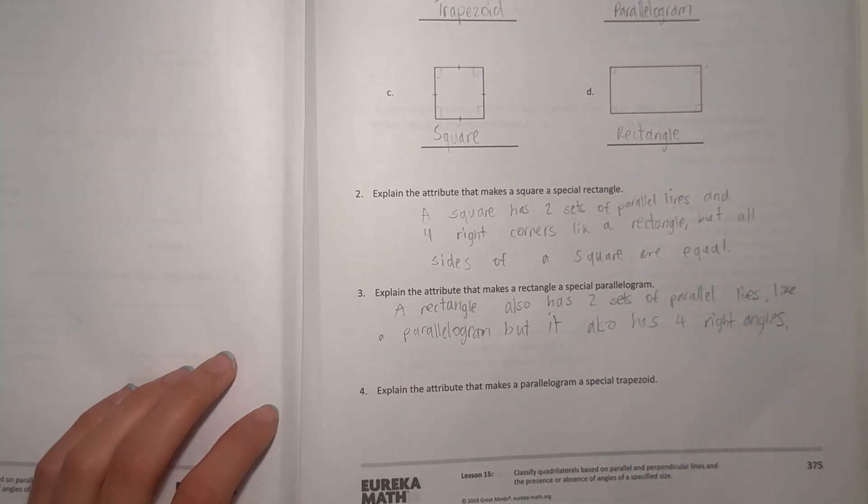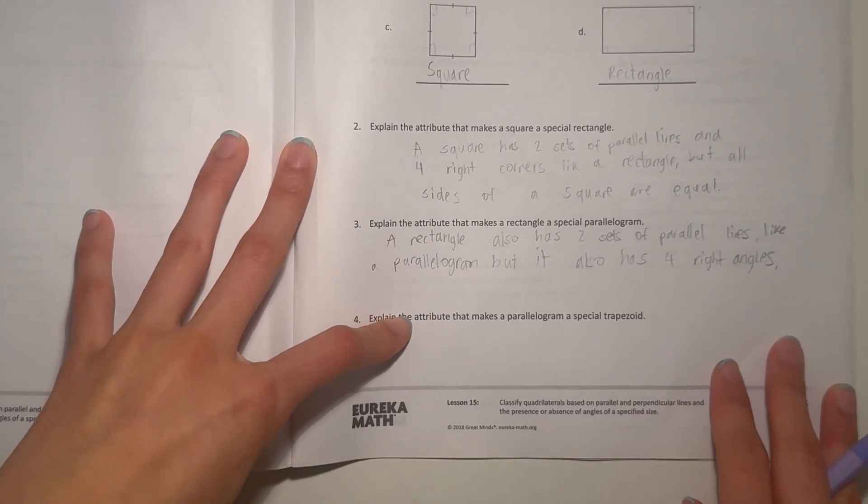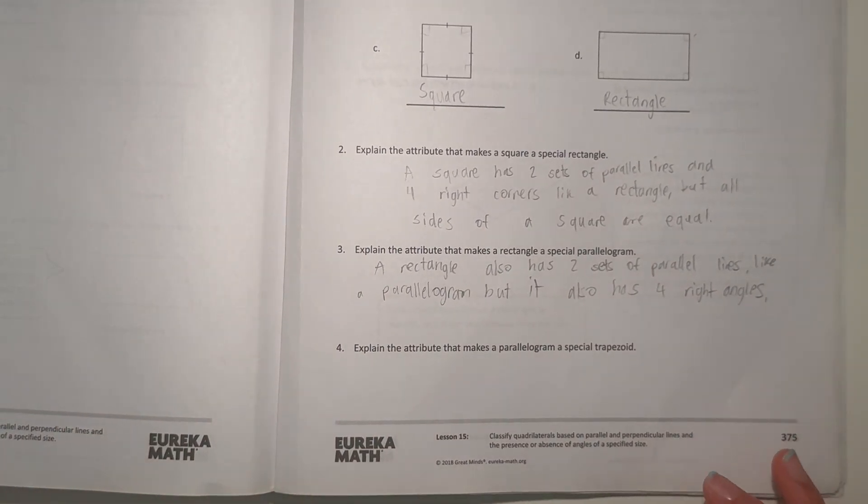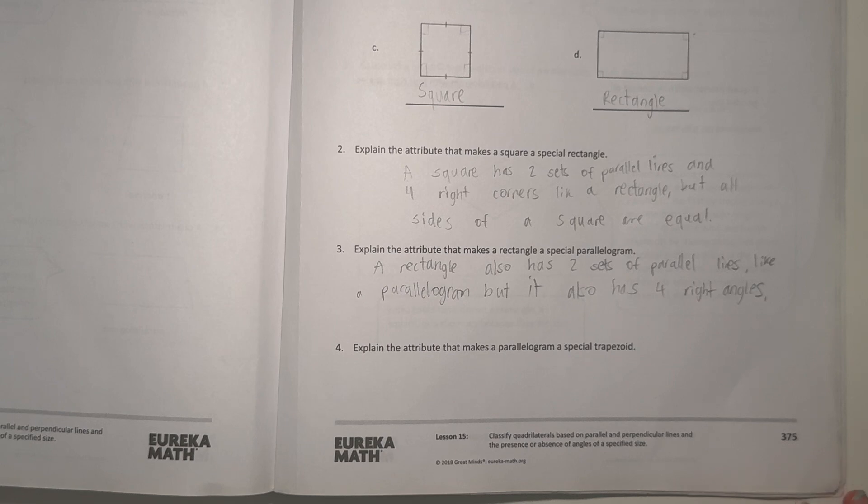And number four says, explain the attribute that makes a parallelogram a special trapezoid. Alright so wait what's trapezoid again? It has four sets, four sides and four corners, yeah and one set parallel lines.